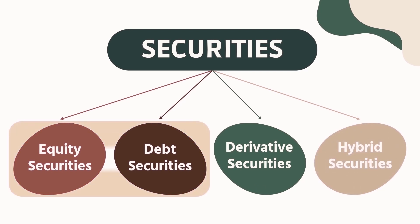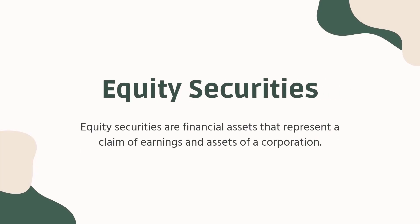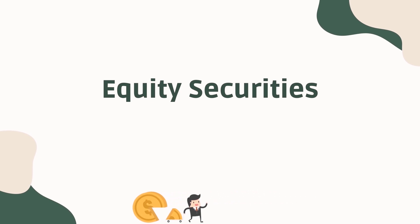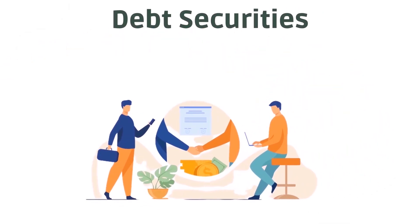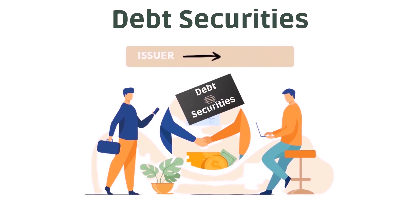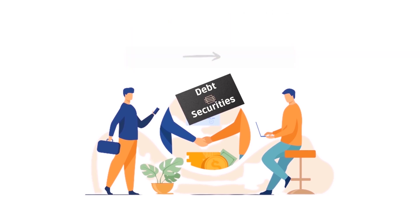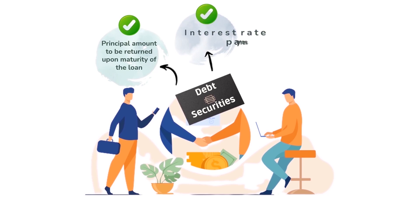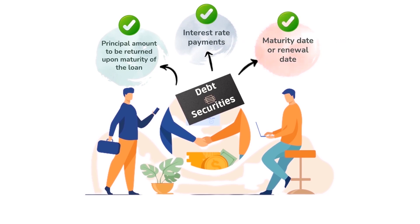Two of which will be our main focus are equity securities and debt securities. Equity securities are financial assets that represent a claim of earnings and assets of a corporation. The characteristic that most defines an equity security, differentiating it from most other types of securities, is ownership. Debt securities are financial assets that define the terms of a loan between an issuer (the borrower) and an investor (the lender). Debt securities do not include futures contracts and auction contracts. The terms typically include the principal amount to be returned upon maturity, interest rate payments, and the maturity date or renewal date.